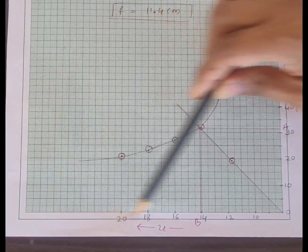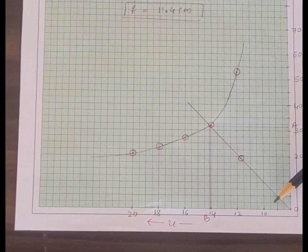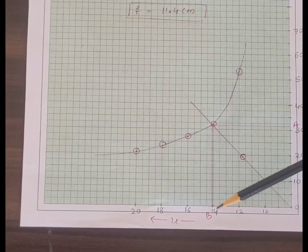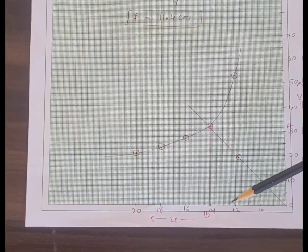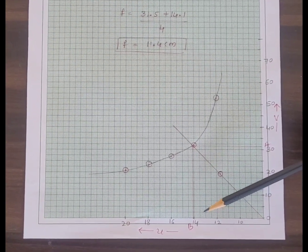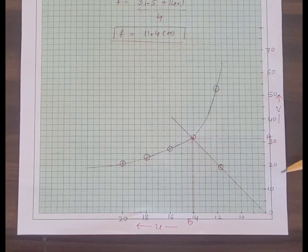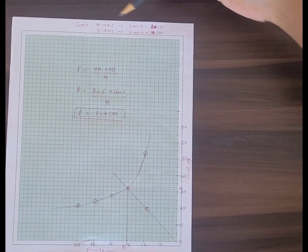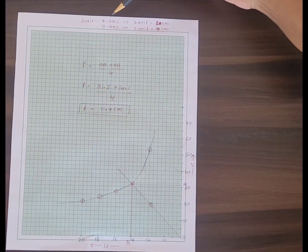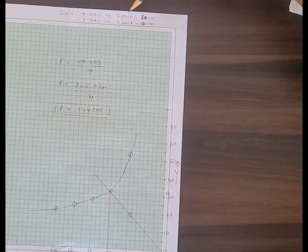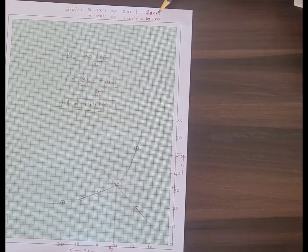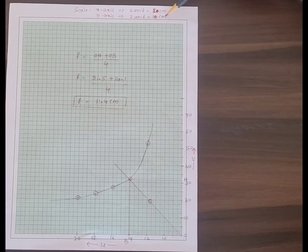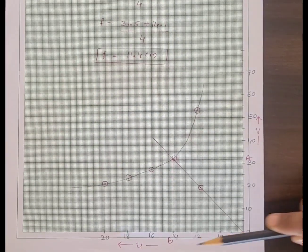Along the x-axis, for every 2 units I have written 10, 12, 14, 16 — the difference is 2, so the scale is 2 units equal to 2 centimetres. Along the y-axis, 2 units equal 10 centimetres. Observe the scale: along the x-axis, 2 units equal 2 centimetres; along the y-axis, 2 units equal 10 centimetres.